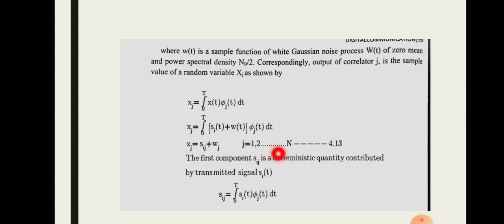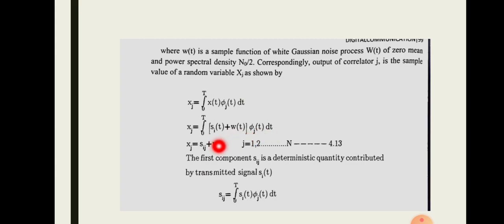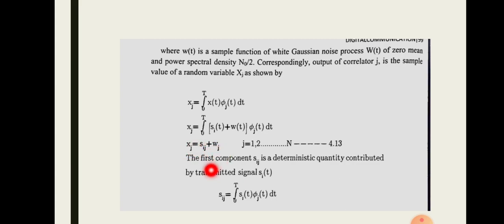We can write the full expression: Xj = sij + wj, where the first integral from 0 to T of si(t) · φj(t) dt gives sij, and the second integral from 0 to T of w(t) · φj(t) dt gives wj. This is the sum of two components — one from the signal and one from the noise.